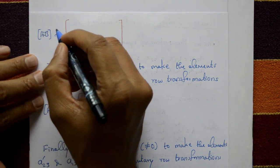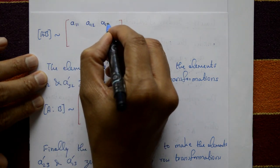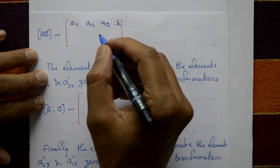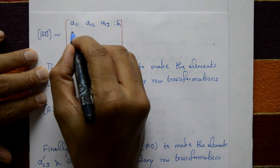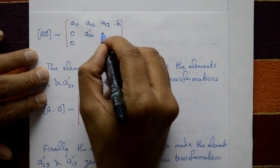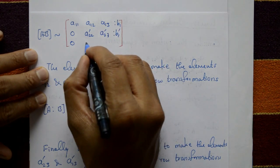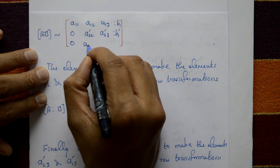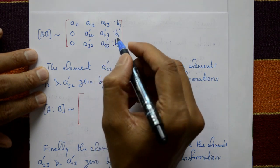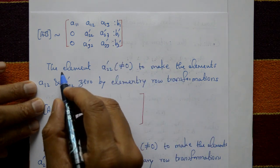After applying the elementary row transformations, the first row remains [a11, a12, a13 | b1]. The element a21 becomes 0, a31 becomes 0, and we get modified elements a22', a23', b2' in the second row, and a32', a33', b3' in the third row.